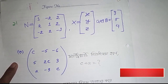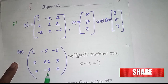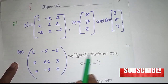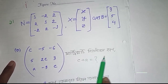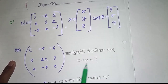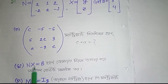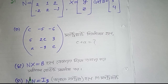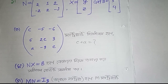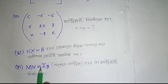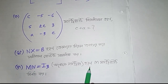c minus 5, minus 6, 5, 2c, 3, a minus 3c matrix. The matrix c plus equal to 1x equal to b. The primer x equal to b, x equal to b. x m n equal to I3, over the matrix m.